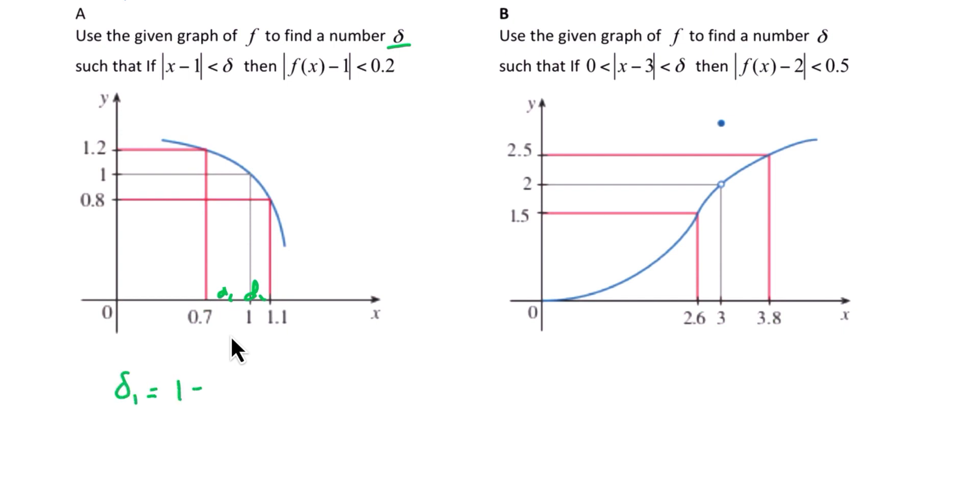Delta 1 is 1 minus 0.7, which is 0.3. Delta 2 is 1.1 minus 1, which is 0.1. And we want the smaller of those. So delta is going to be 0.1, or it could be any other smaller positive value.